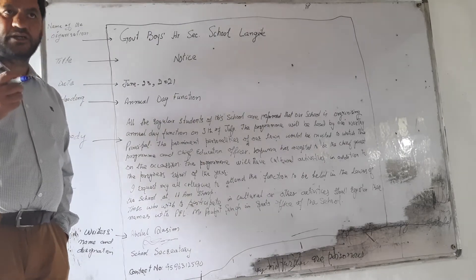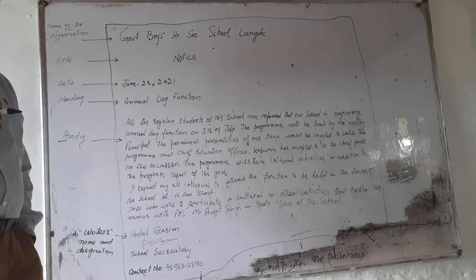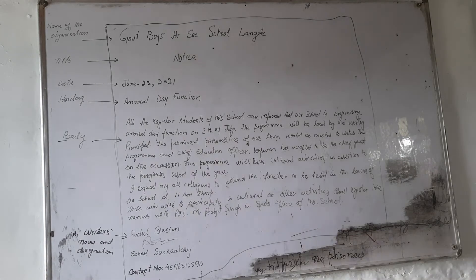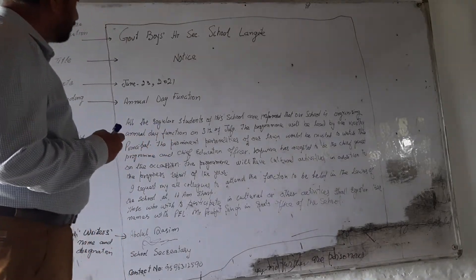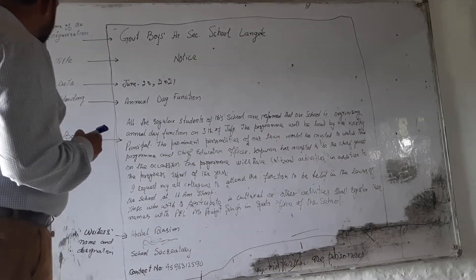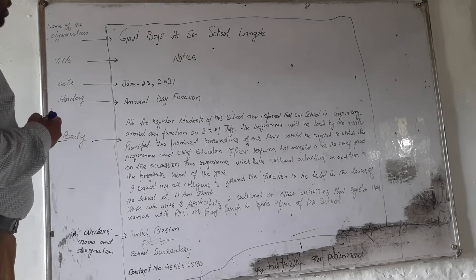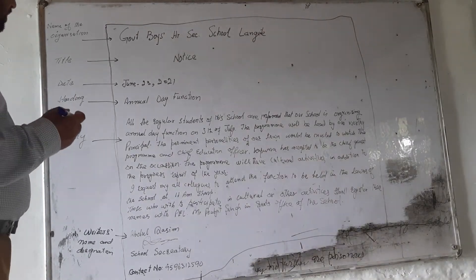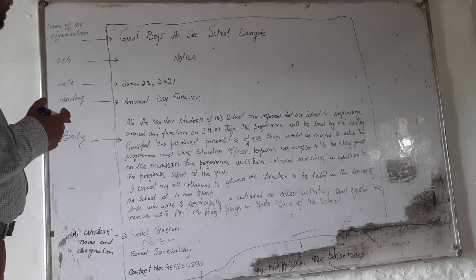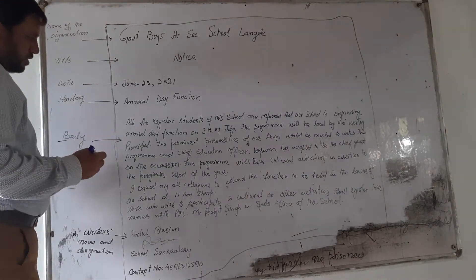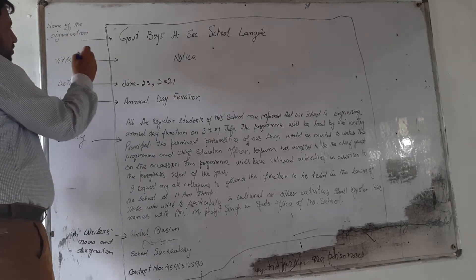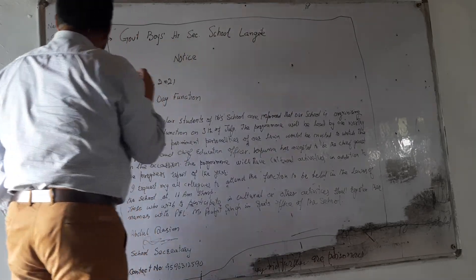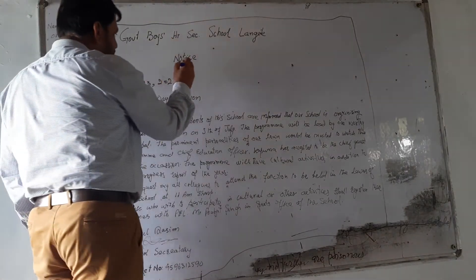Notice writing has a special kind of format. It is a form of writing and we have to follow the format — especially students have to follow the format, otherwise we will lose marks. A notice starts with the name of the organization — the organization that wants to deliver some information. Here I have put an example on the board. It starts with the organization name, and the second element is the title. The title of our notice is always 'NOTICE'.